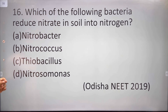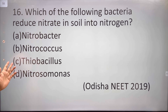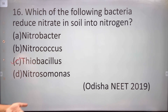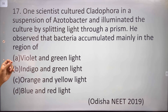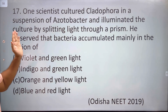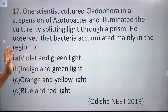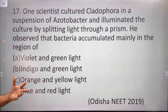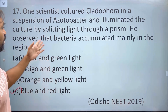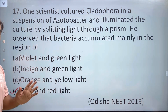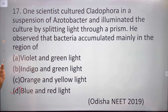Which of the following bacteria reduce nitrate in soil into nitrogen? Thiobacillus carries out denitrification, converting nitrate back to nitrogen. A scientist cultured Cladophora in a suspension of Azotobacter and illuminated the culture by splitting light through a prism. He observed that bacteria accumulated mainly in the blue and red regions — because oxygen is produced there by aerobic bacteria during photosynthesis.